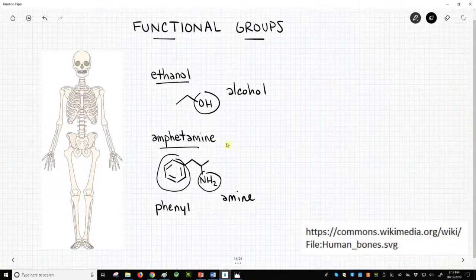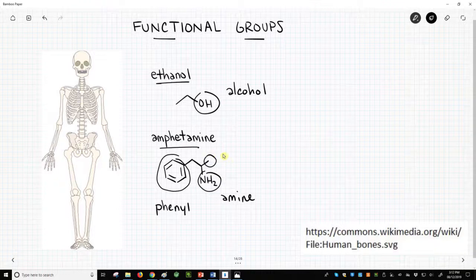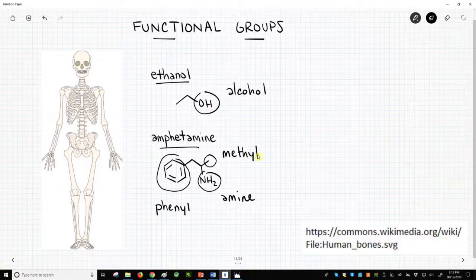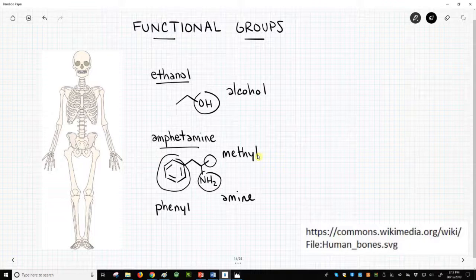This carbon group off the side is called an alkyl group, specifically a methyl group. It's also a feature of amphetamine. Learning different functional groups helps chemists either distinguish one molecule from another or point out one part of a molecule. Several videos in this playlist will systematically outline the functional groups found in drug-like molecules.